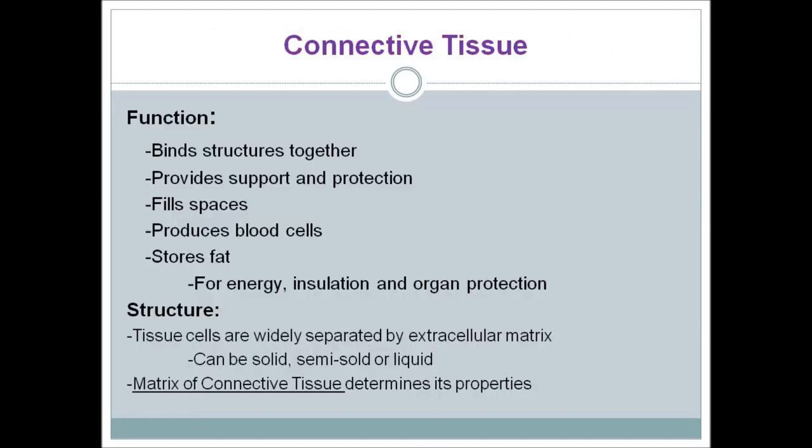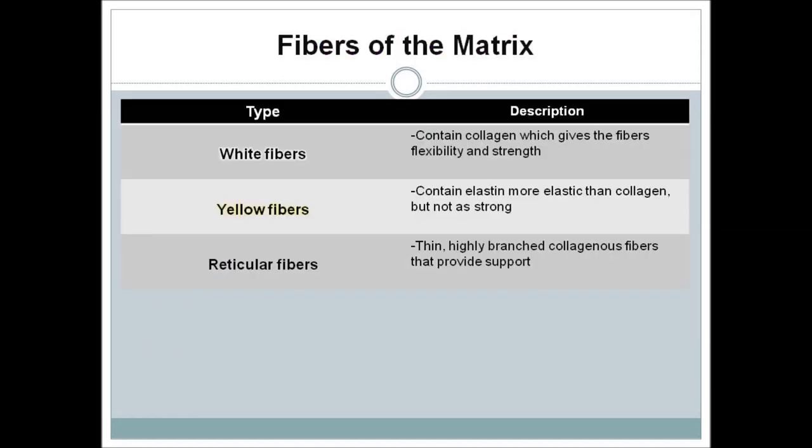Our second type of tissue is connective tissue. Its functions include binding structures together, providing support and protection, filling spaces, producing blood cells, and storing fat for energy, insulation, and organ protection. Tissue cells are widely separated by an extracellular matrix, which can be solid, semi-solid, or liquid — and the matrix determines the tissue's properties.